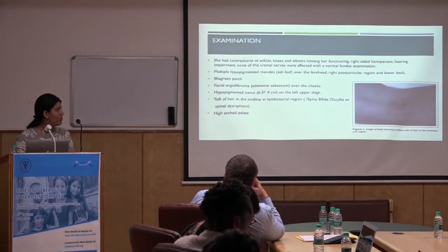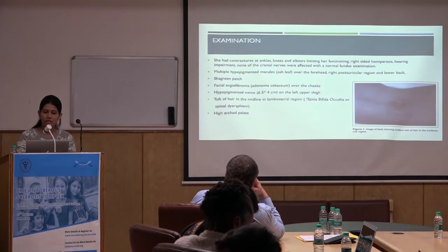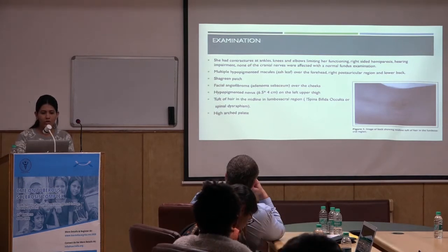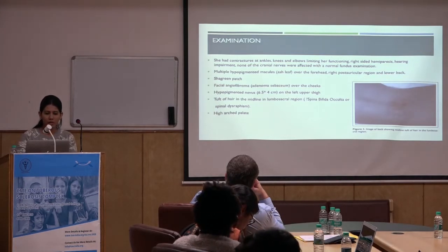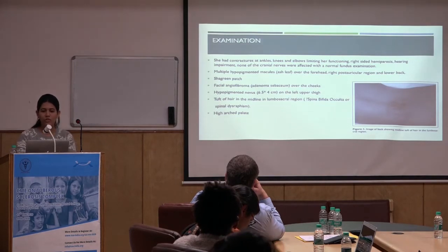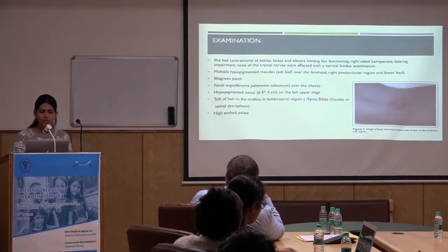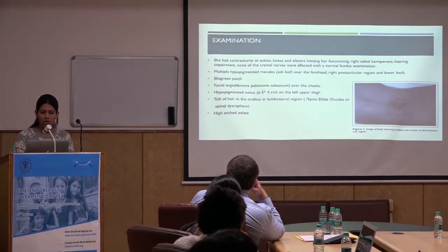On examination, she had contractures at ankles, knees, and elbows limiting her functioning, right-sided hemiparesis, hearing impairment, and a normal fundus examination was recorded. There were multiple hypopigmented macules over the forehead, right post-auricular region, and the lower back, a shagreen patch, a facial angiofibroma, a hypopigmented lesion on the left upper thigh, and a tufted hair in the midline of the lumbosacral region, which was thought to be a spinal bifida occulta or spinal dysraphism, and a high-arched palate.